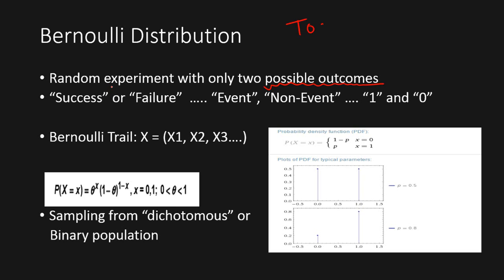Like in the case of tossing a coin, we have only two outcomes, right? That kind of experiments are associated with a certain kind of probability distribution known as Bernoulli distribution.